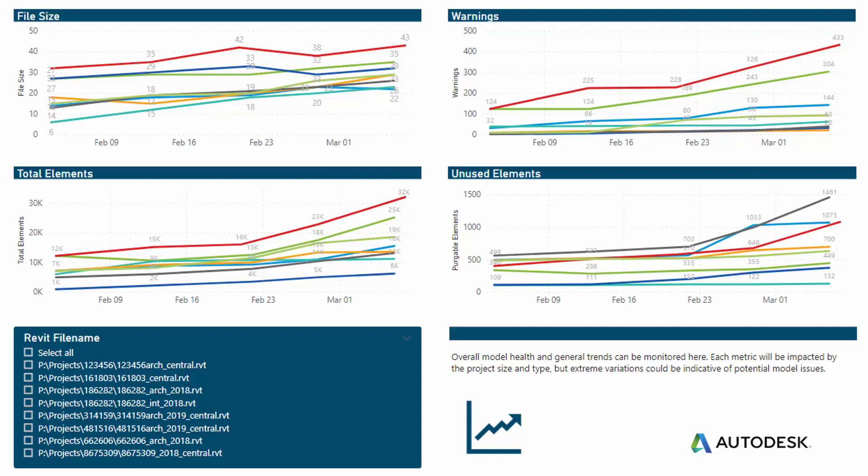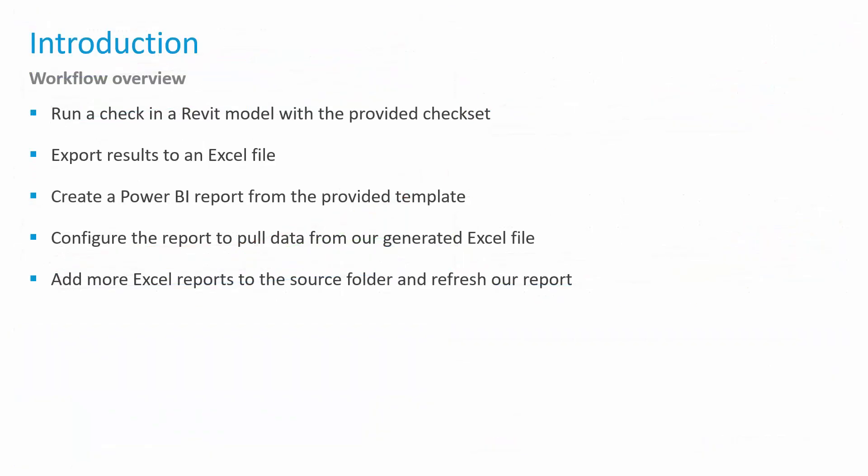This is just one page of the sample Power BI template. The general workflow is: you run a check inside a Revit model with the provided check set, export those results to an Excel file, create a Power BI report from the provided template, configure the report to pull data from your generated Excel file, and then over time simply add more Excel reports to the folder where Power BI is looking. The report will automatically update, refresh, and aggregate that data over time.